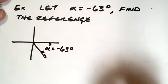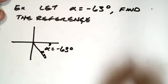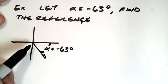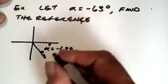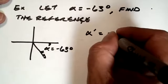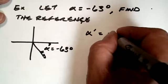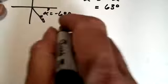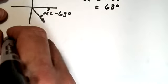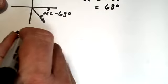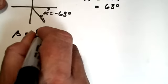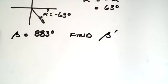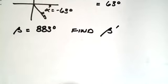So alpha equals negative 63. It turns out that the reference angle alpha prime is just the positive version of that, right? Because the roles of the initial and terminal side would reverse. So in this case, alpha prime is equal to the negative of alpha, which happens to be equal to 63 degrees. How about another one, maybe one a little bit simpler. Well, how about beta equal 883 degrees, find the reference angle. And I'm using some shorthand here.